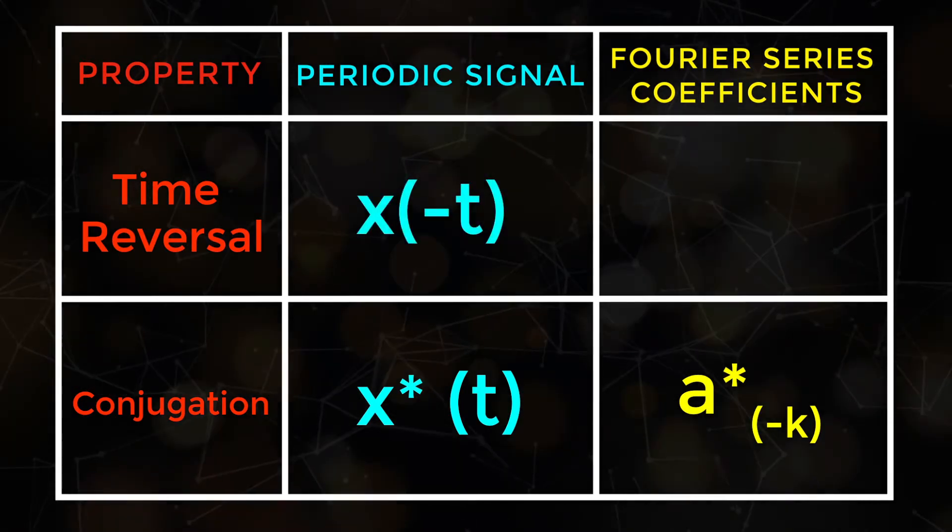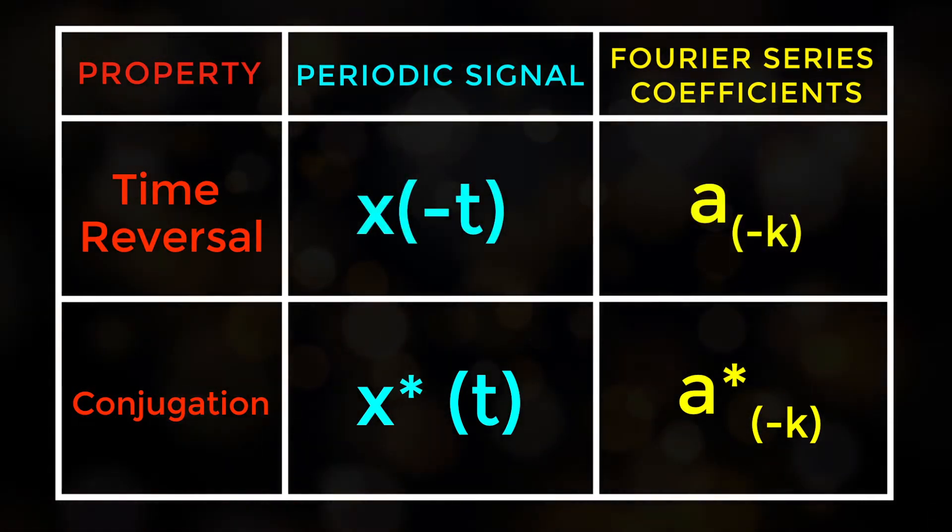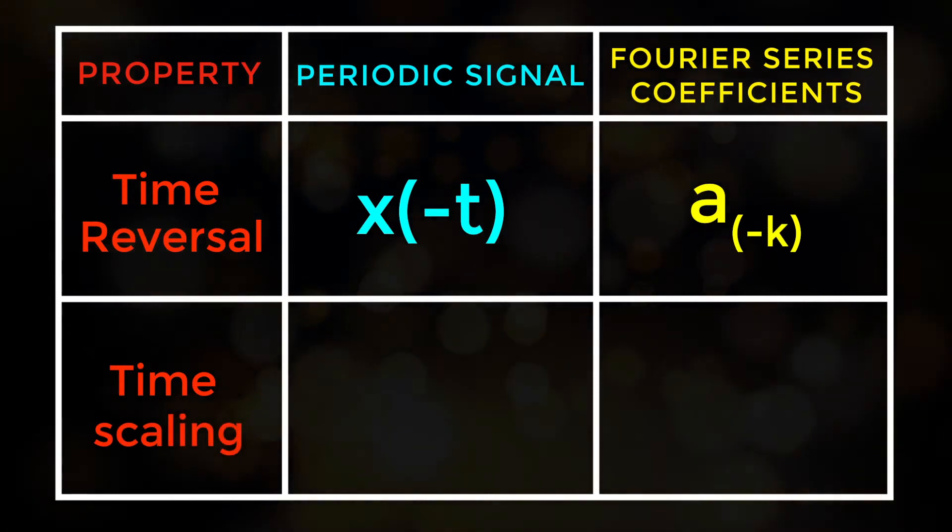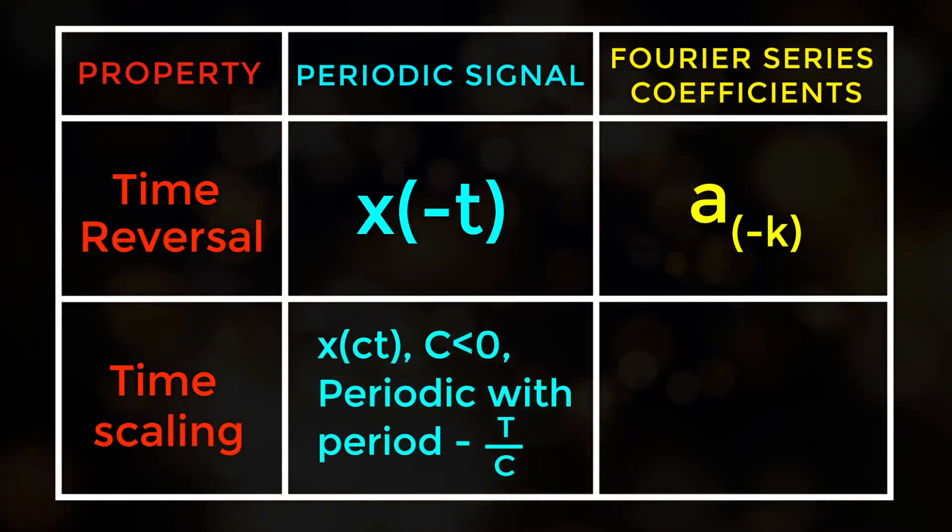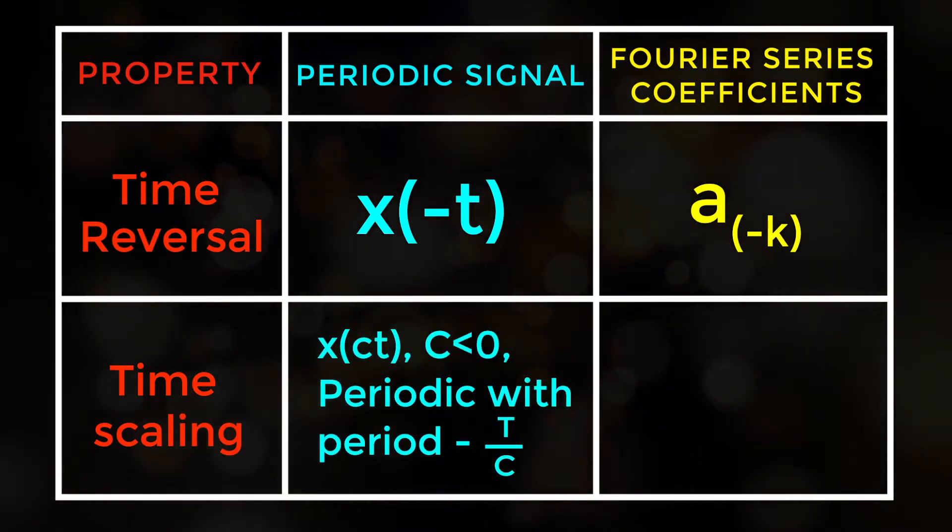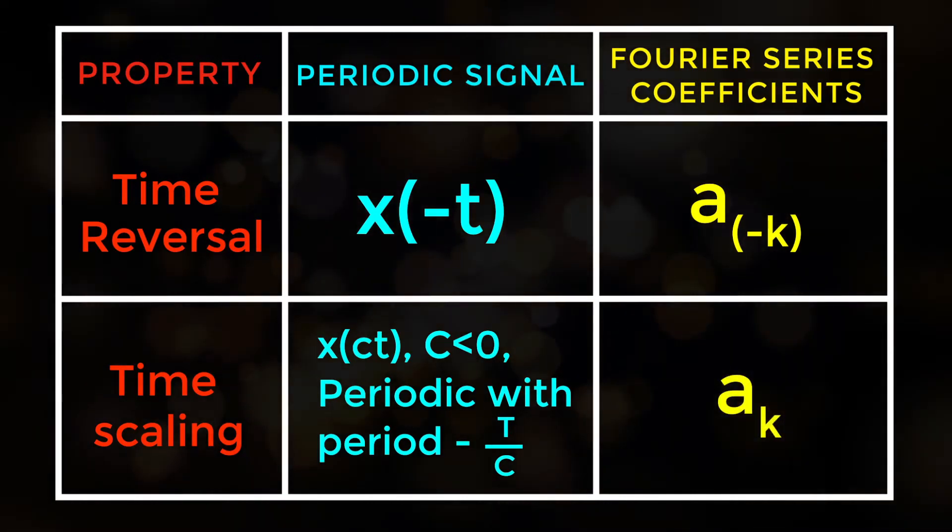Time scaling: Periodic with period x of c t, c less than 0, for Fourier series ak.